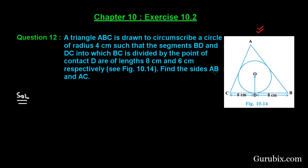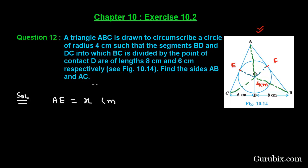This is the figure of the question. Triangle ABC is circumscribing the circle of radius 4 centimeters, so OD is 4 centimeters. Since the circle is inscribed in the triangle, AC is a tangent to the circle. It touches the circle at point E, and AB at point F. Now let us join OF and OE, and also join AO, OC, and OB.